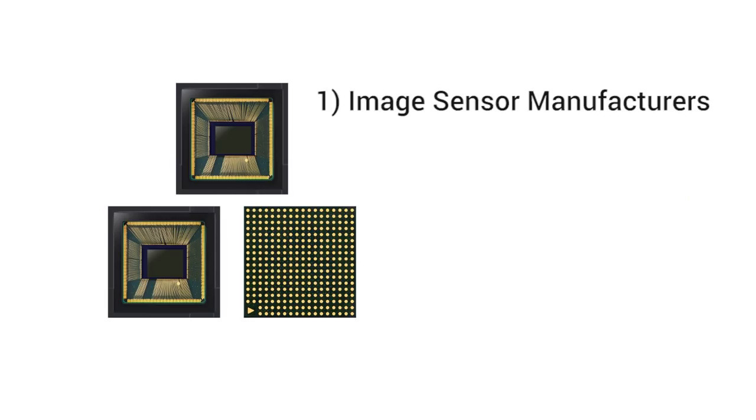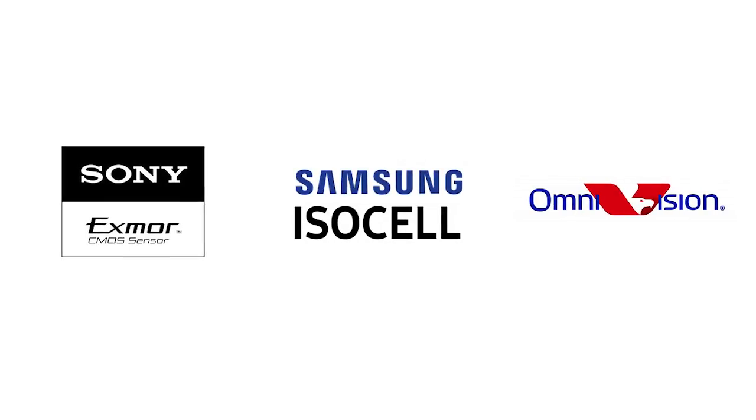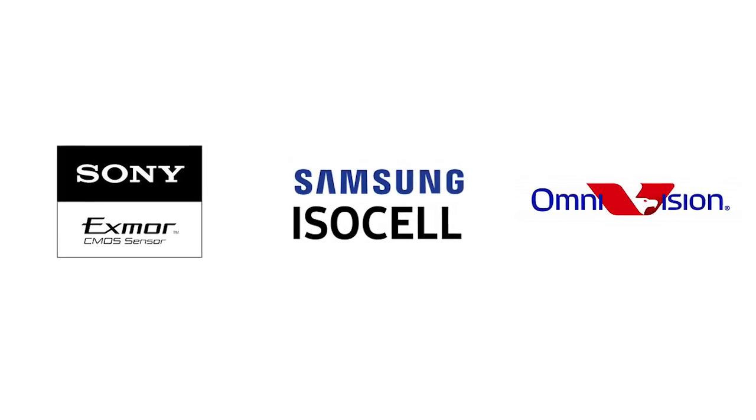In this case, the image sensor needs to be looked at in the phone. When considering image sensors, you will have to worry about three things. One is the company that makes the image sensor. Second is image sensor size. Third one is pixel size. For image sensor companies, the renowned ones are Sony, Samsung, and OmniVision — these are renowned companies in the smartphone market.